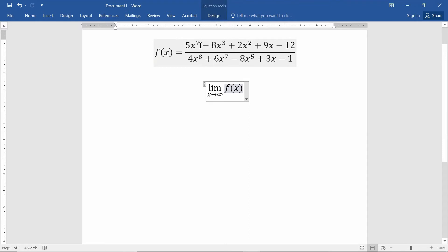We have a degree seven polynomial on top. We have a degree eight polynomial on bottom. So this limit as x goes to infinity is simply zero.